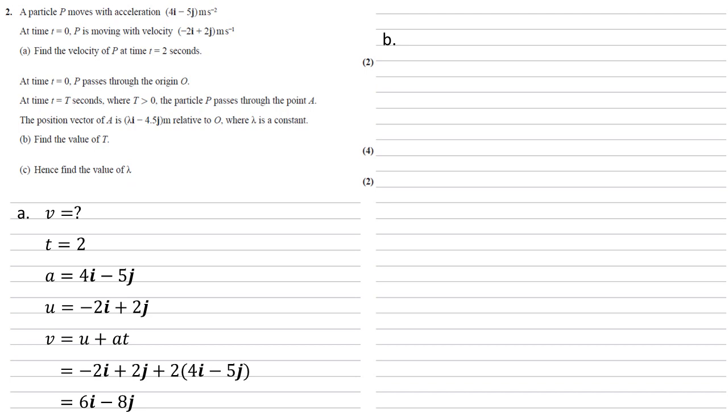So again, let's list what we've got. We want to find t. We know that r for displacement is lambda i minus 4.5j. Our acceleration is still 4i minus 5j, and our initial velocity is minus 2i plus 2j. So putting all these together, we're going to use the formula r equals ut plus half at squared.